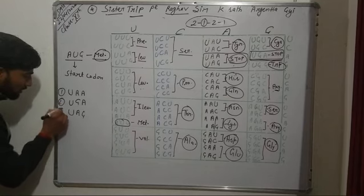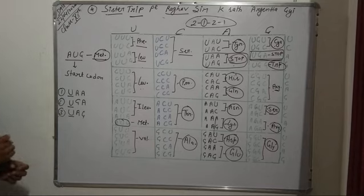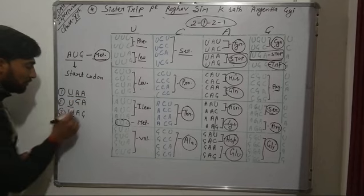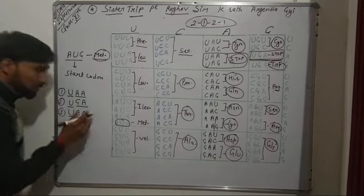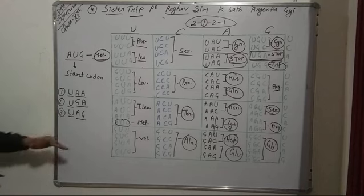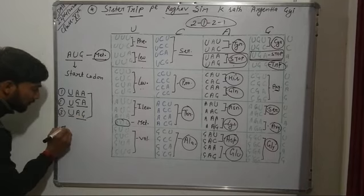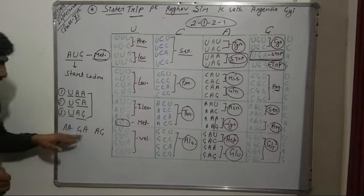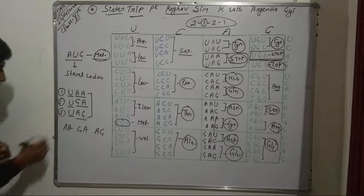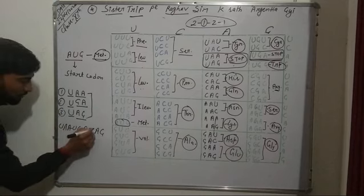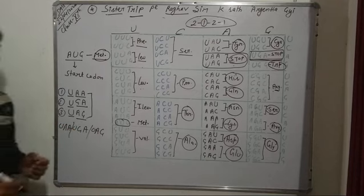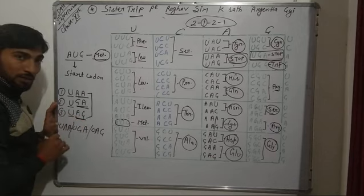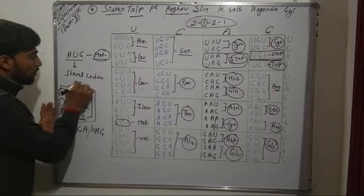In all 3 stop codons, U is present first. Then A — meaning A, GA meaning ZHA, and AG meaning A-ZA. The short trick to remember these is: A-ZA, A-ZA — with U written in front of each. So UAA, UGA, and UAG are the 3 stop codons.